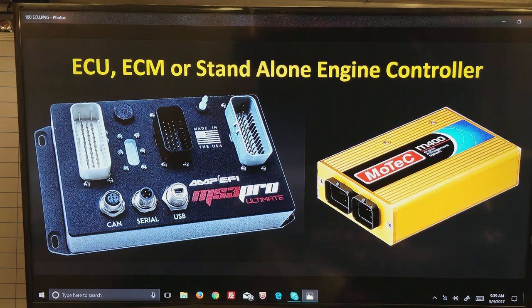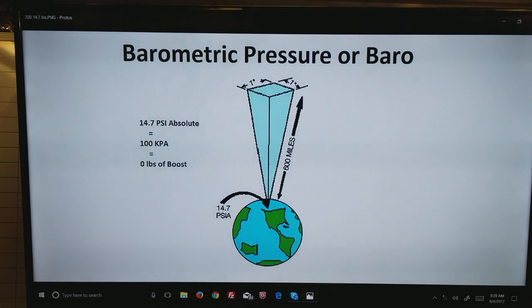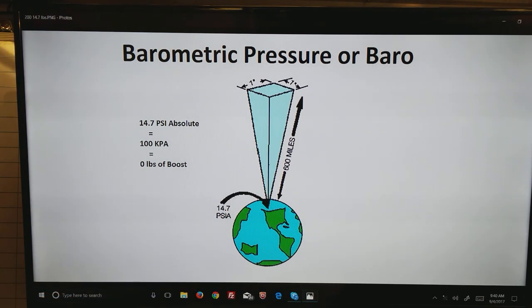The first thing I want to describe is barometric pressure. The entire world has about 14.7 psi pressure at sea level. So let's go through the definition of how they come up with that number.